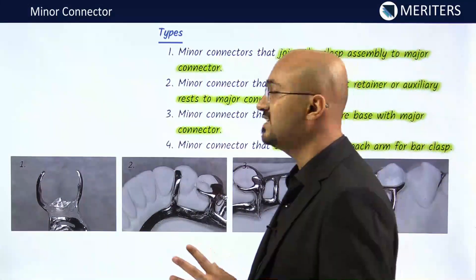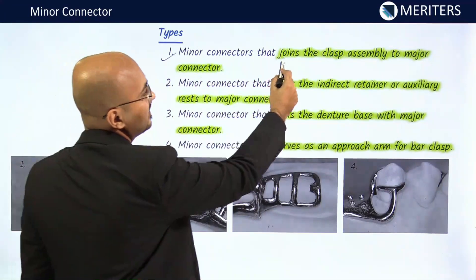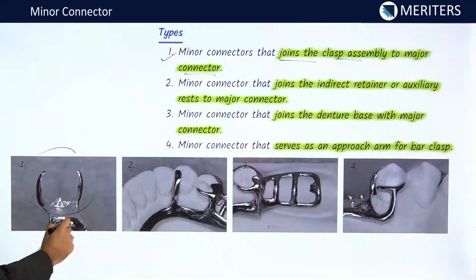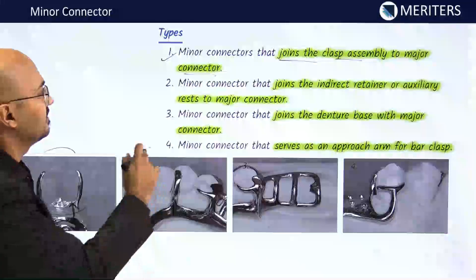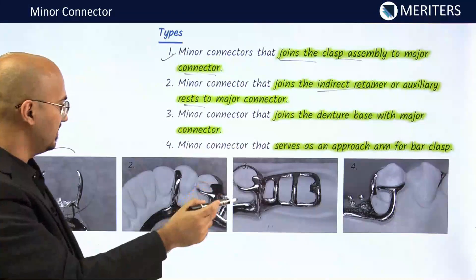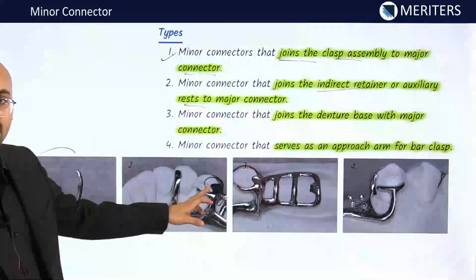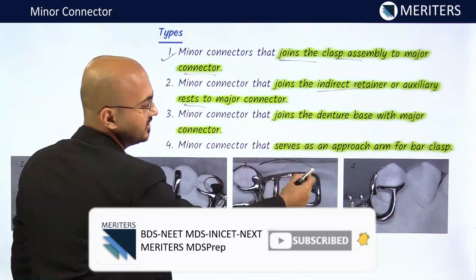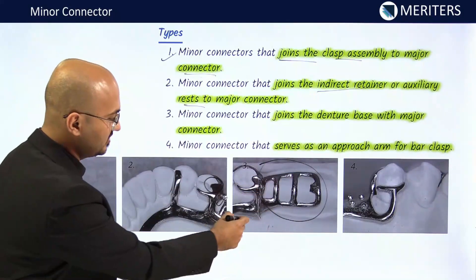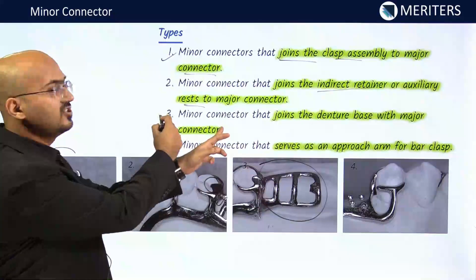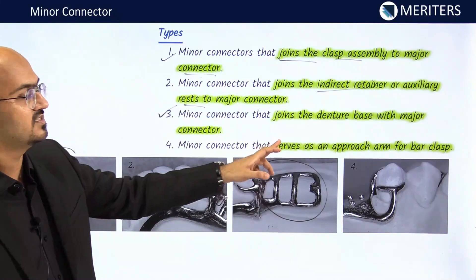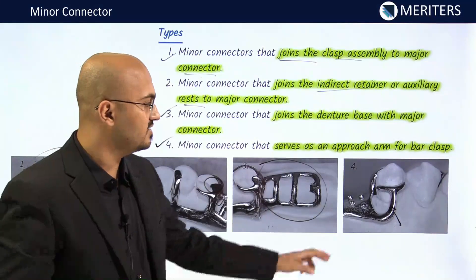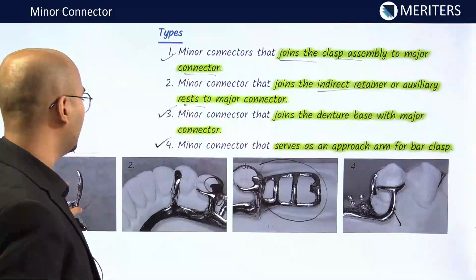There are four types of minor connectors. First: the minor connector that joins the clasp assembly to the major connector (for the direct retainer). Second: one joining the indirect retainer or auxiliary rest to the major connector. Third: a minor connector that joins the denture base — including artificial teeth and acrylic resin — with the major connector. Fourth: a minor connector that serves as an approach arm for a bar clasp, coming from underneath the gingiva in gingivally-approaching clasps.